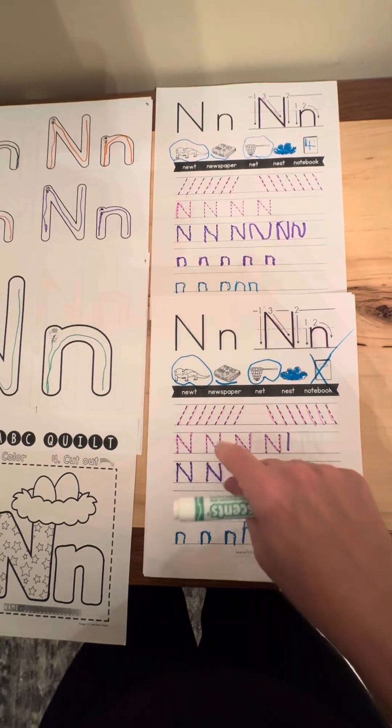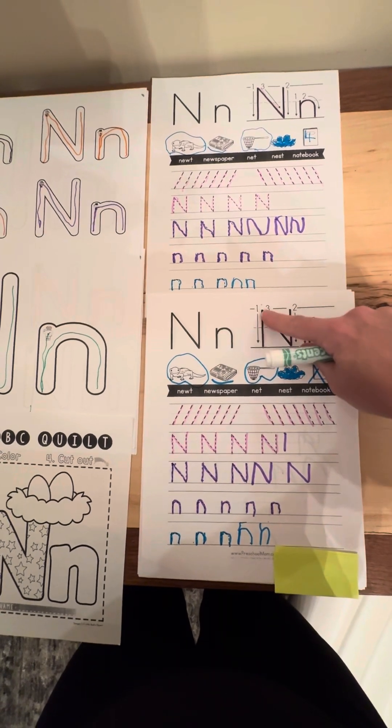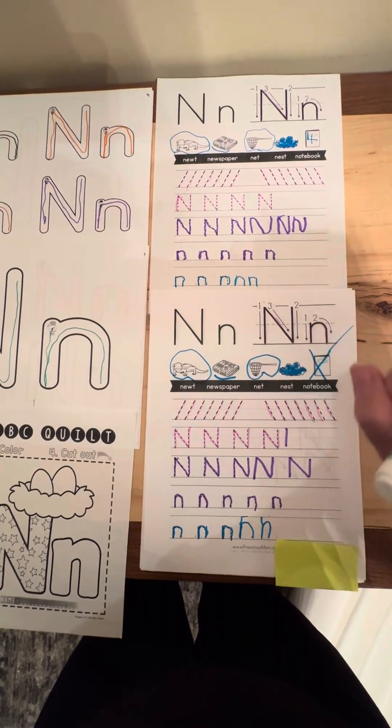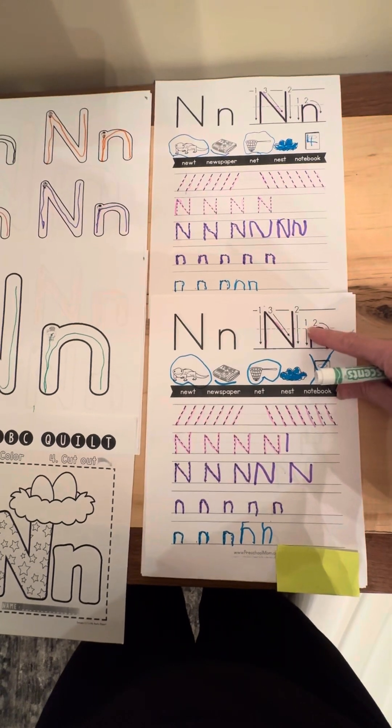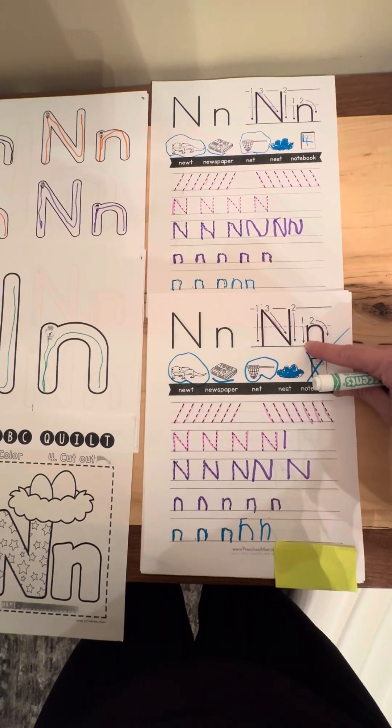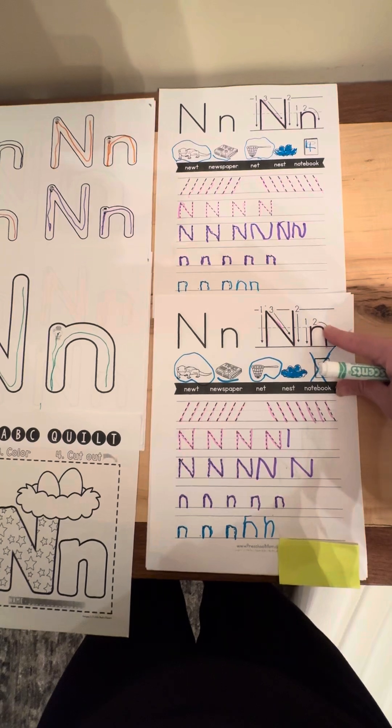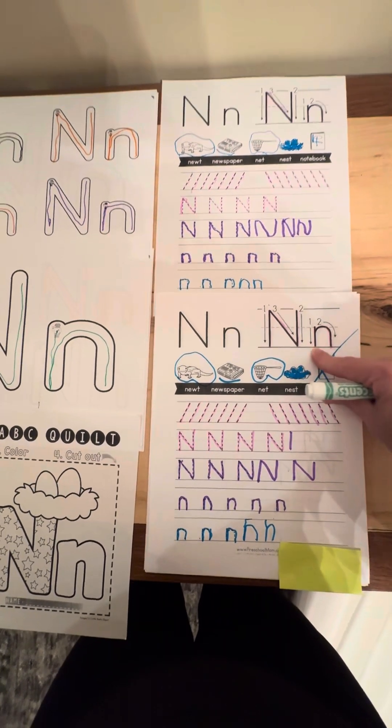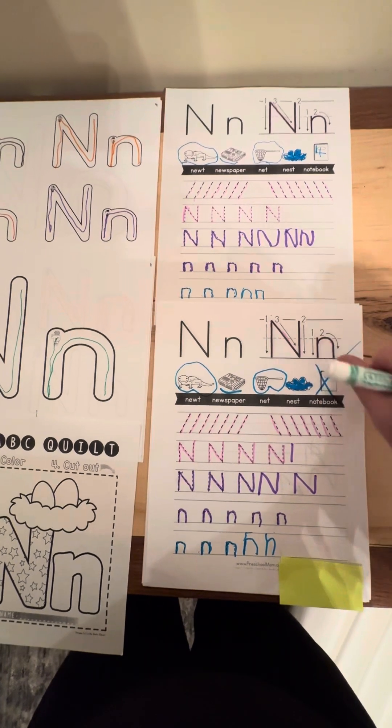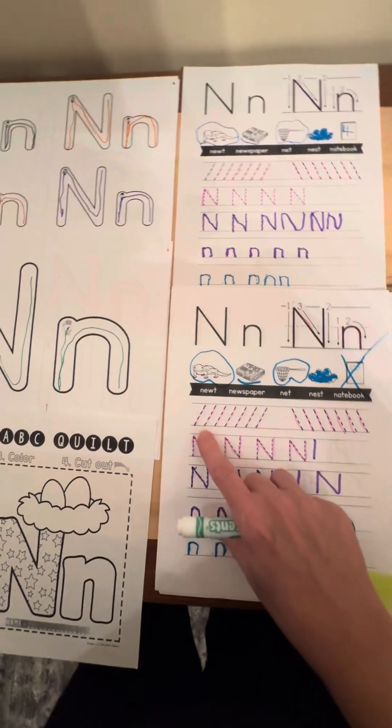Then we worked on some more fine motor. Again tracing the letter N: straight down, lift the marker, down the slide, up the slide, and then here straight down, retrace, and then make a rainbow. We use a lot of those terms like diagonal, slide, retracing, so they're getting the hang of how to make these letters. Then there's a fine motor practice.